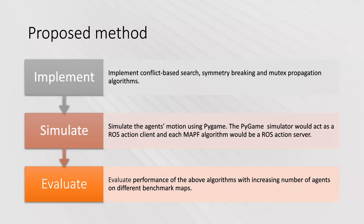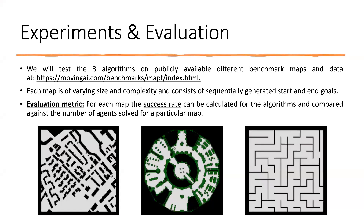The proposed method is to implement three main state-of-the-art algorithms: Conflict-Based Search, Symmetry Breaking, and Mutex Propagation. We intend to simulate these algorithms and agent motion using Pygame, then extend the Pygame simulator by integrating it with ROS. We will evaluate the performance of the implemented algorithms using different benchmark maps, comparing with metrics like number of agents and success rates. The success rate is defined as the maximum number of instances a given map and MAPF solver can solve as we increase the number of agents.